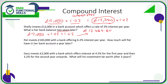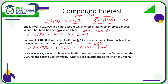Let's have a look at the next question: £183,000 with 6.2% interest after one year. The multiplier for 6.2% is 0.062, but for an increase it's going to be 1.062. So the calculation is 183,000 times 1.062, which comes to a total of £194,346.